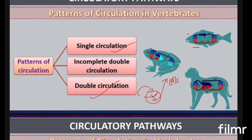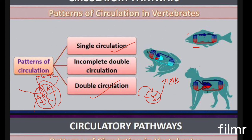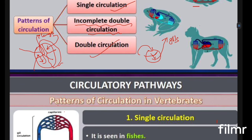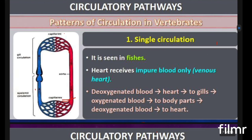In double circulation, as in human beings and mammals, deoxygenated blood comes from the body into the auricle, passes through the ventricle to the lungs for oxygenation, and then returns again to the auricle — so the blood enters the heart two times per cycle. In three-chambered hearts (amphibians and reptiles), there is incomplete double circulation — neither fully single nor fully double.